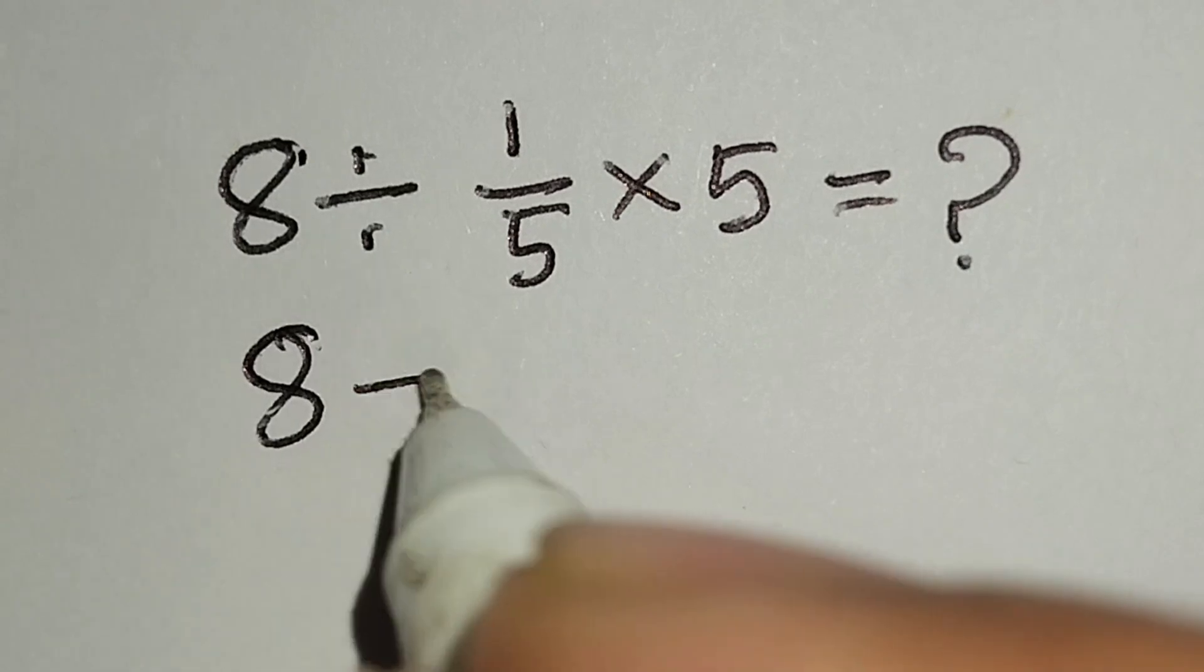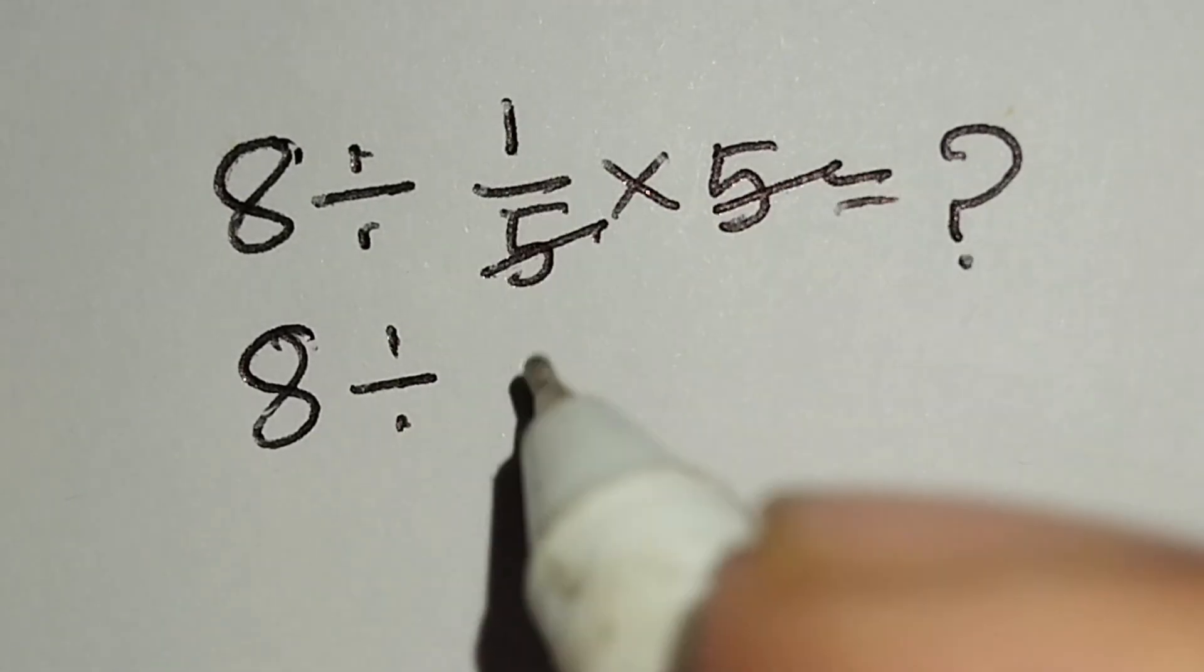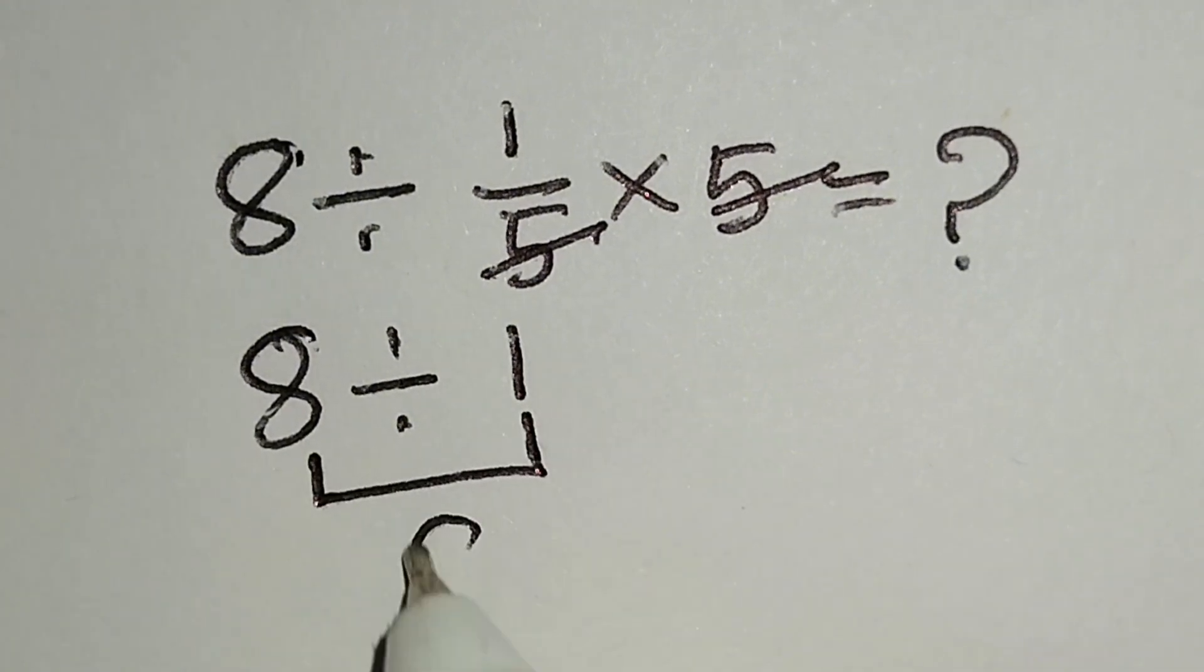Here, this 8 divided by this 5, this 5 cancels out. Here this 1. 8 divided by 1 gives us 8.